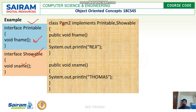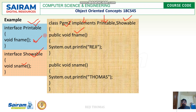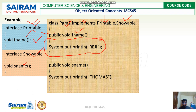Look at the class called pgm2 — this is the class name, and notice the keyword implements. It implements printable as the first interface and showable as the second interface. So this class is going to inherit properties from multiple interfaces. We have taken fname, which is a method inside the interface called printable, and the implementation is done within the class.